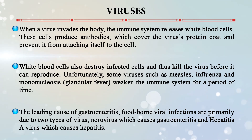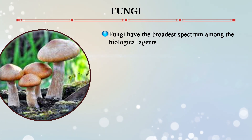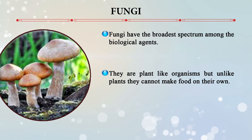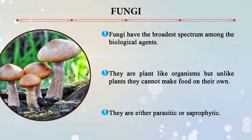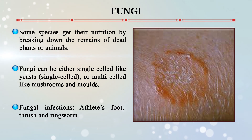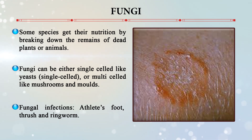The last topic in this module is fungi. They have a broader spectrum among biological agents and are plant-like organisms that cannot make their own food — which is why they are not green in color and lack the mechanism of photosynthesis. They are either parasitic or saprophytic, getting their nutrition from dead plants and animals. Fungal infections can cause wrinkling of the skin, ringworm, and athlete's foot. Mushrooms and molds can also cause certain infections. Fungi are composed of molds and yeasts, and fungal diseases are classified as mycosis, mycotoxicosis, and allergies, which can be localized or systemic.